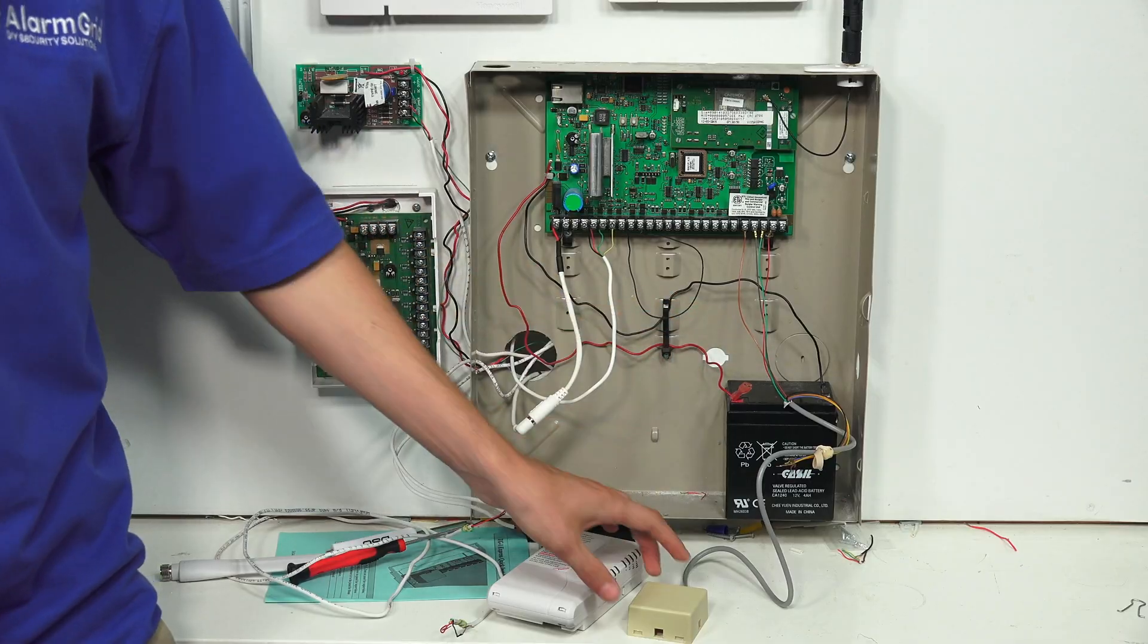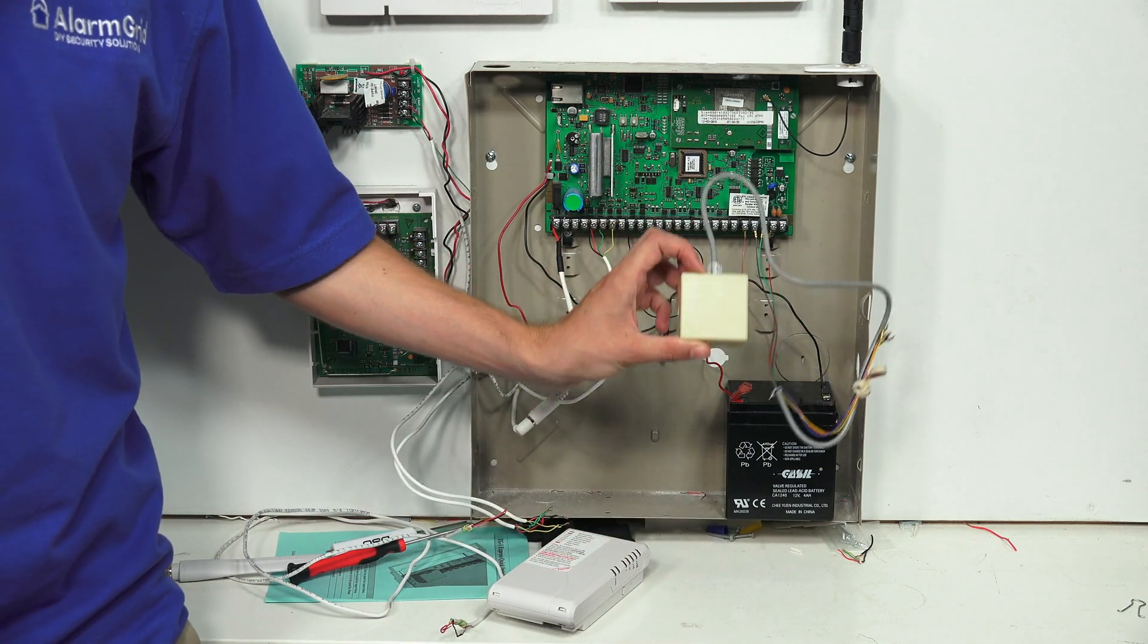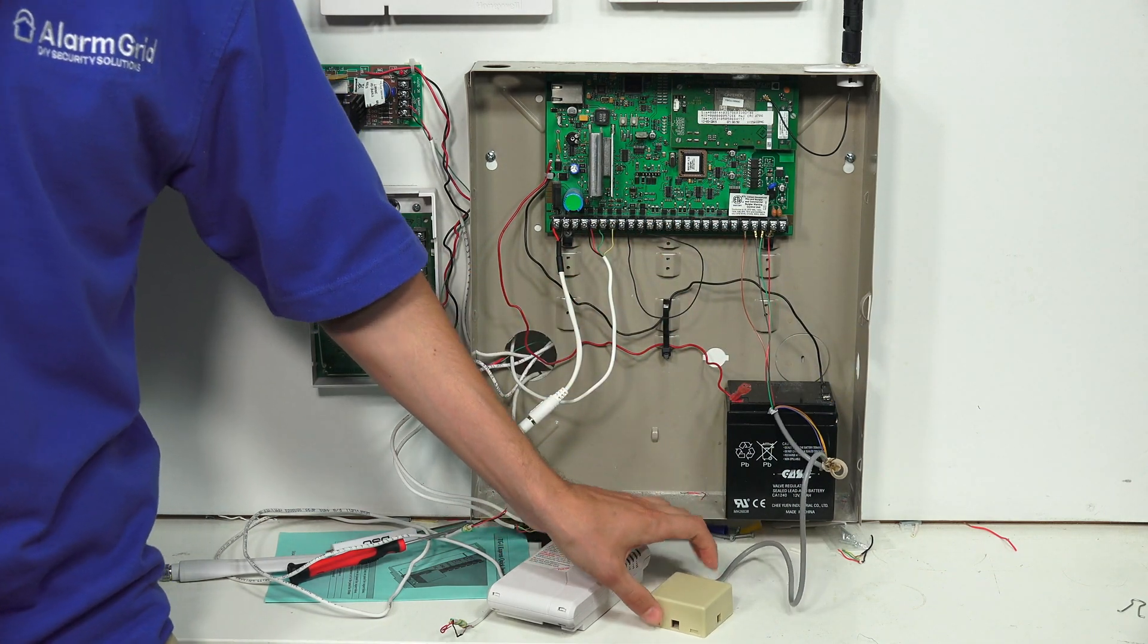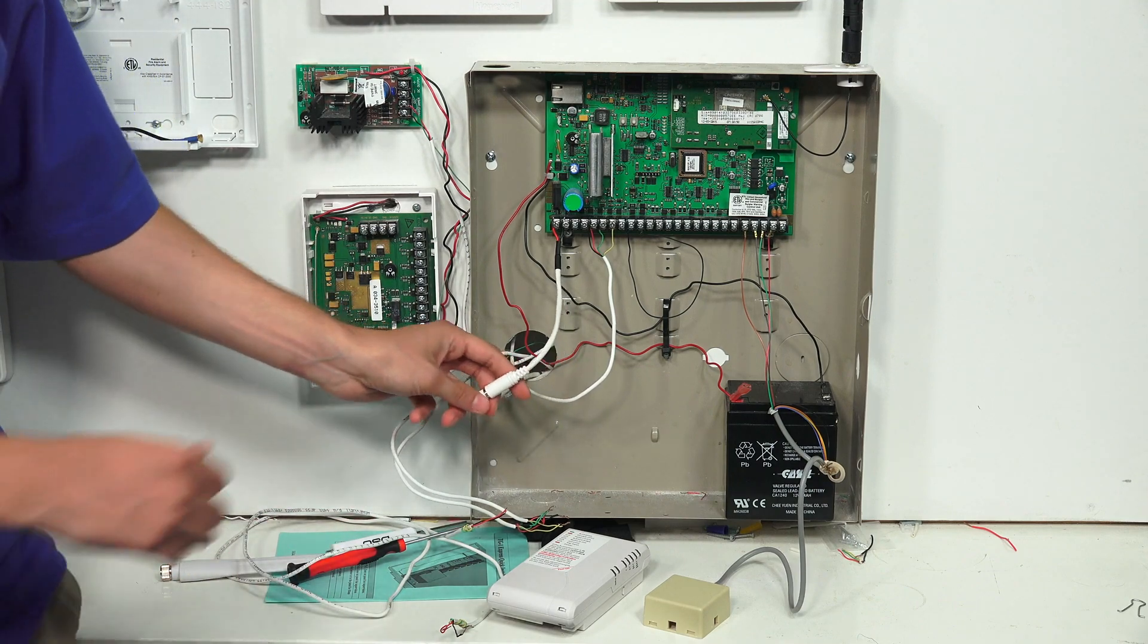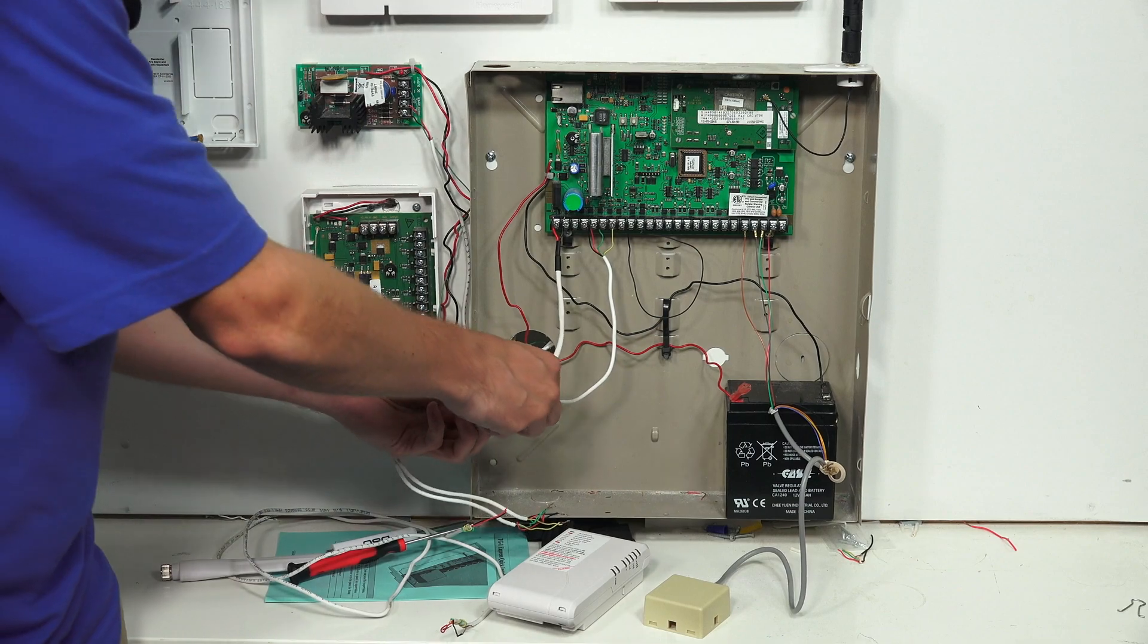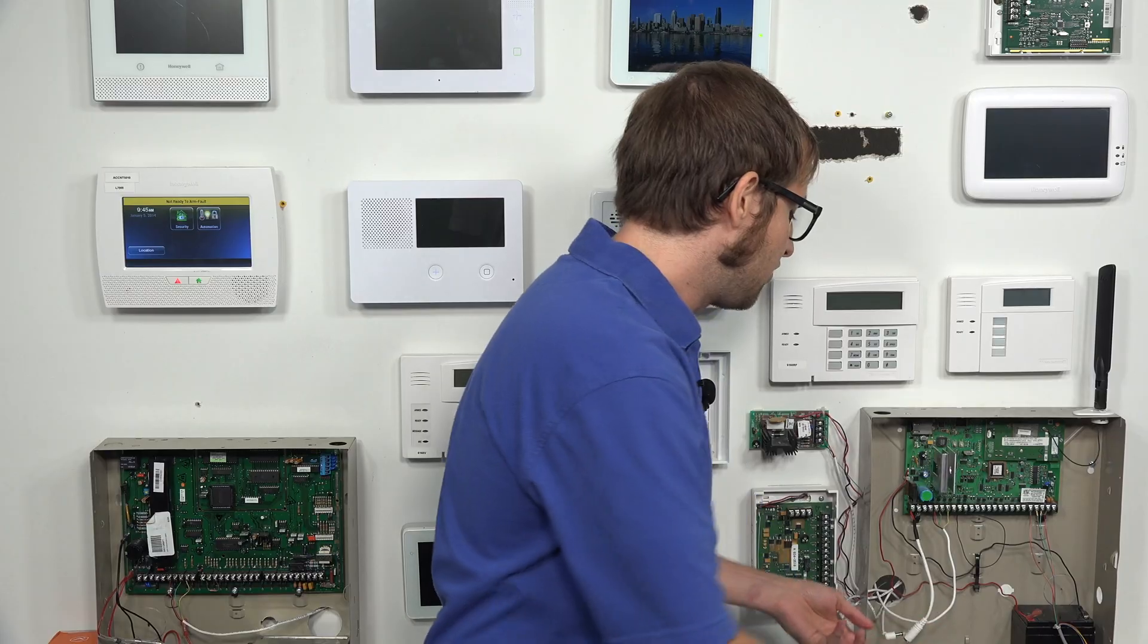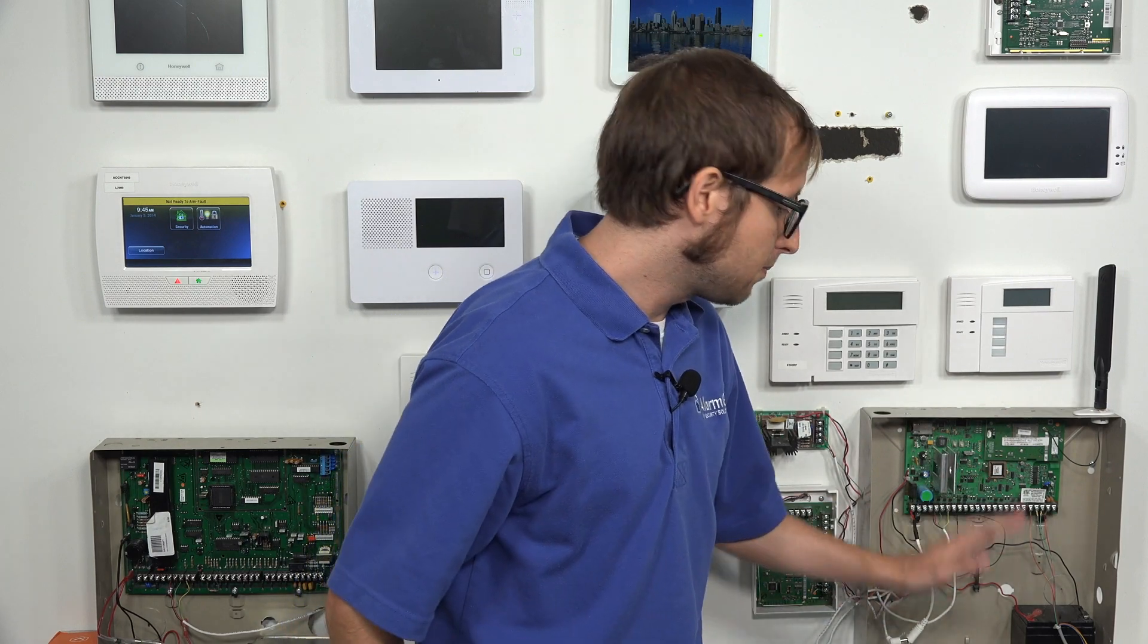We're going to leave these connections alone, but we will be taking it out from our RJ31X jack. First thing we want to do is power down the panel. Our backup battery is already disconnected, so we're just going to use our Honeywell LT cable to power it down. We're going to disconnect the connection. You see our keypad went blank, and we're ready to go. Always make sure you power down your system before making any hardware changes.